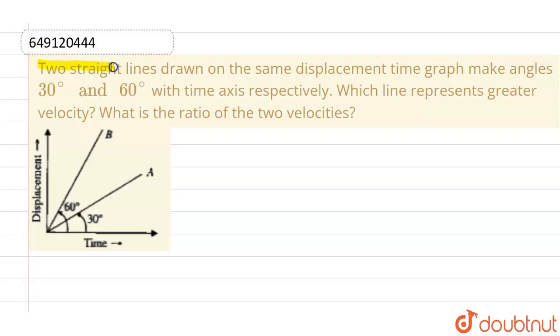This given question is: two straight lines drawn on the same displacement-time graph make angles 30° and 60° with the time axis respectively. Which line represents greater velocity? What is the ratio of the two velocities?